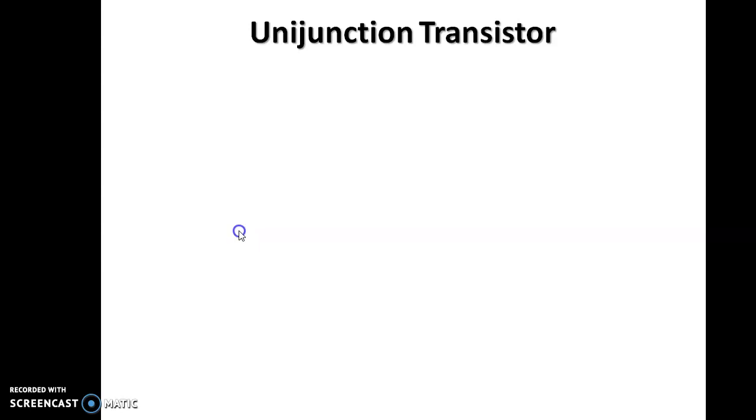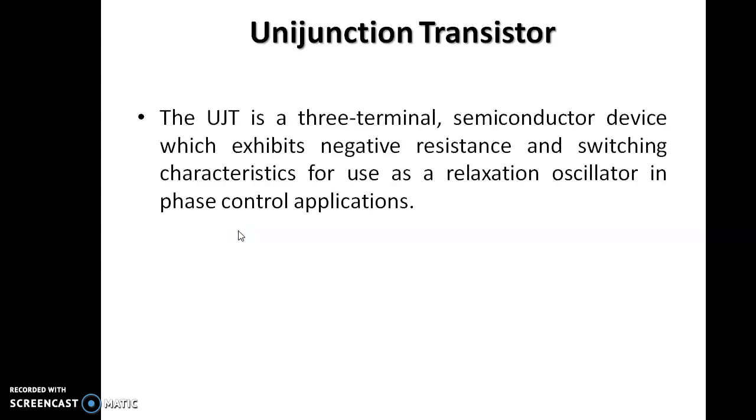Unijunction Transistor is a three-terminal semiconductor device. It exhibits negative resistance and switching characteristics for use as a relaxation oscillator in phase control applications.